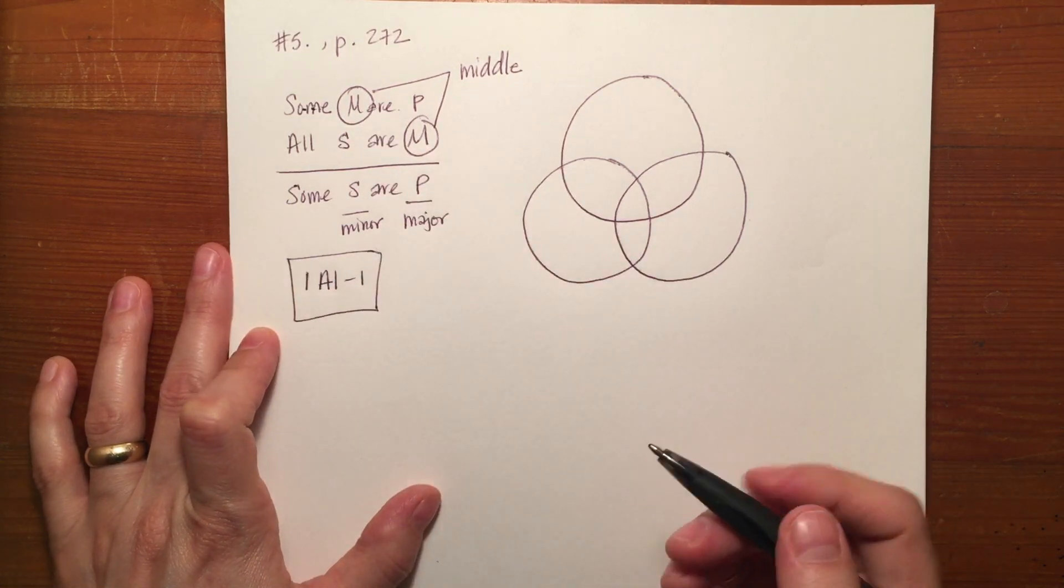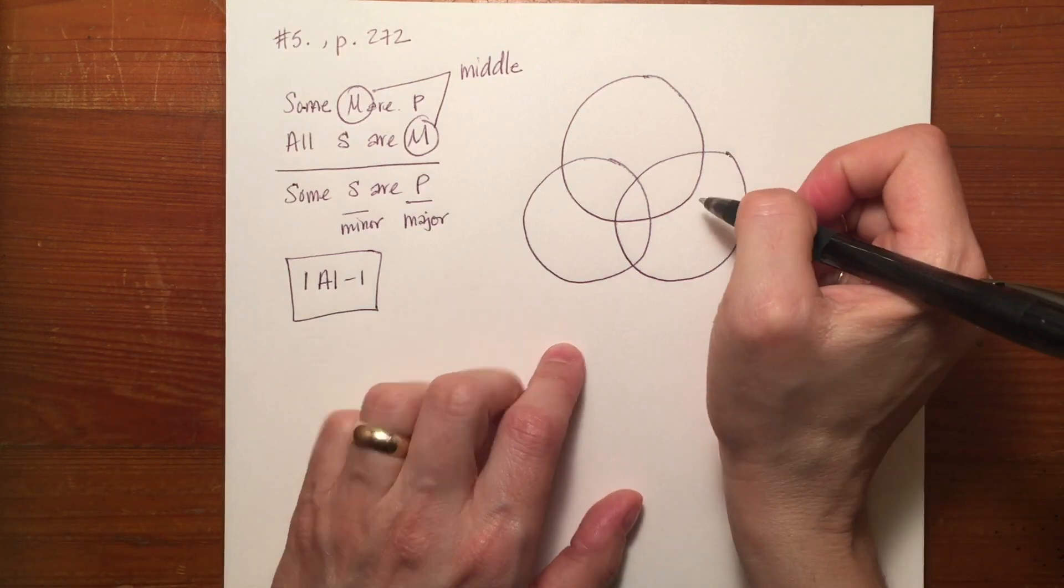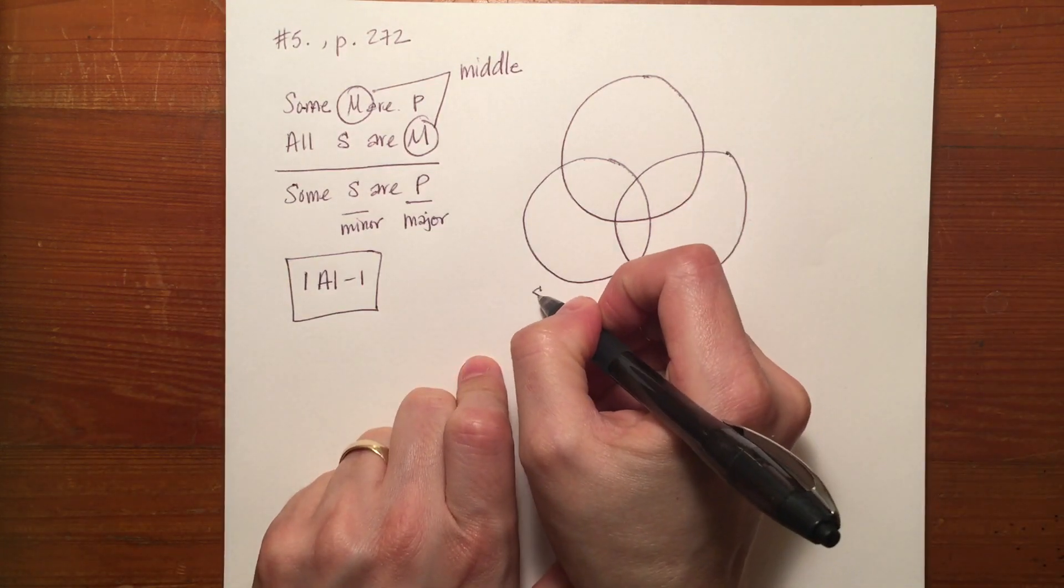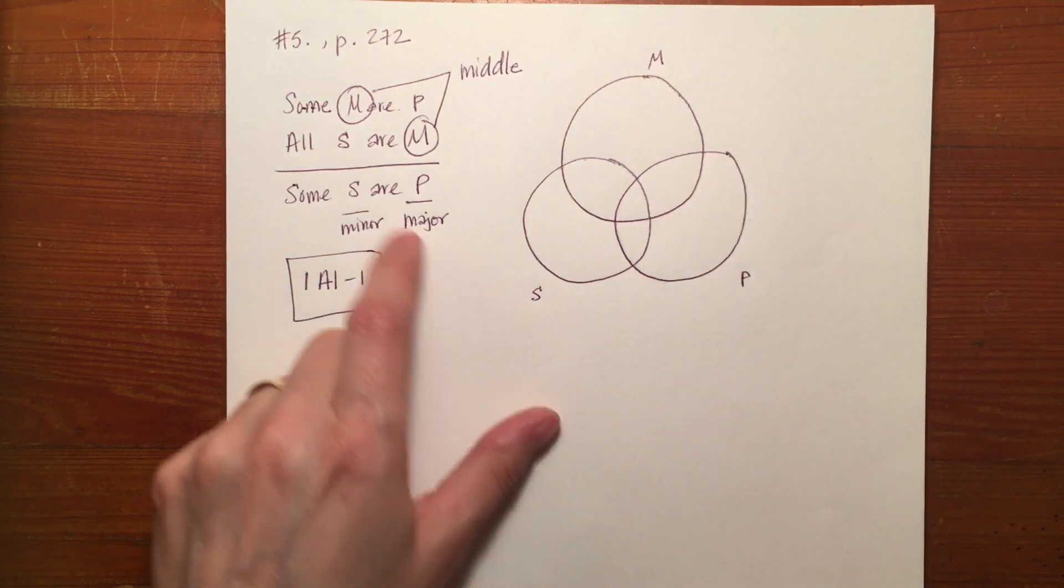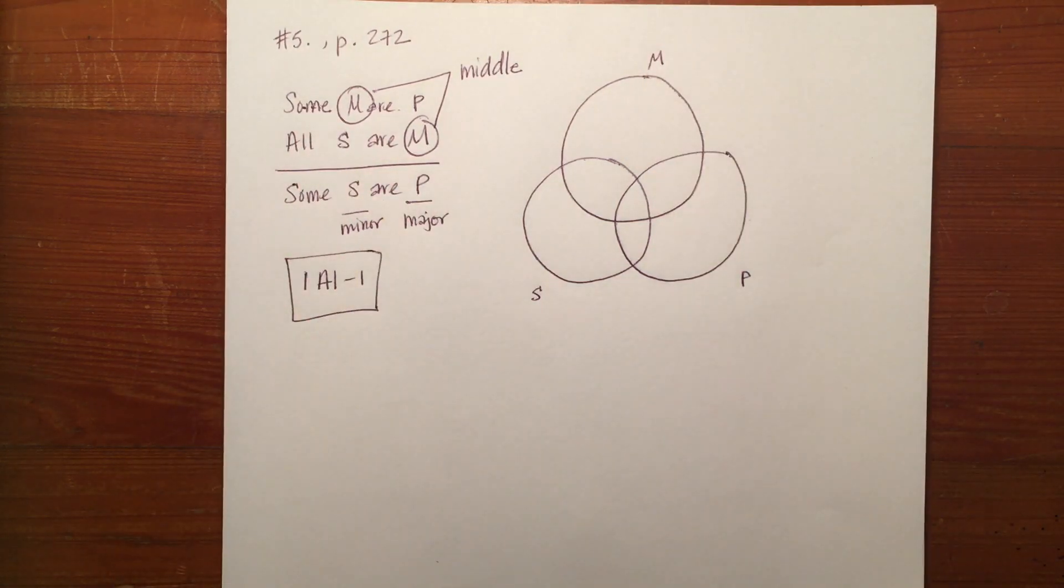The Venn diagram will always have the minor term here, the major term here, and the middle term here. They could be different letters but here they've given you M, S, and P just to make it as easy to understand as possible.